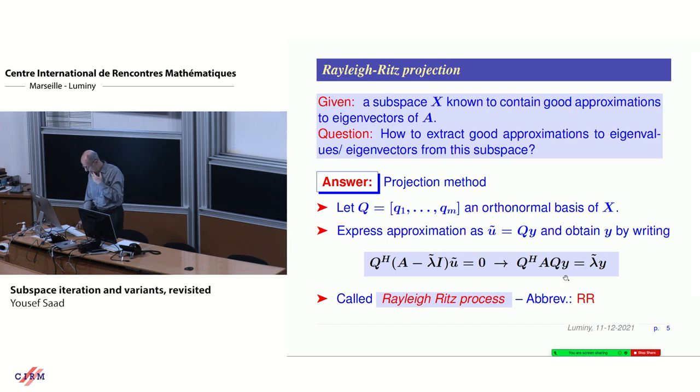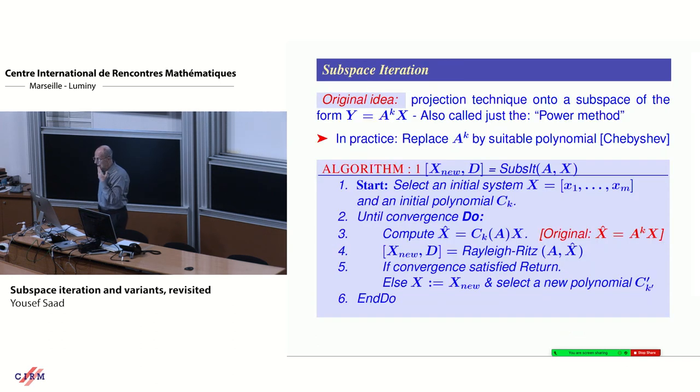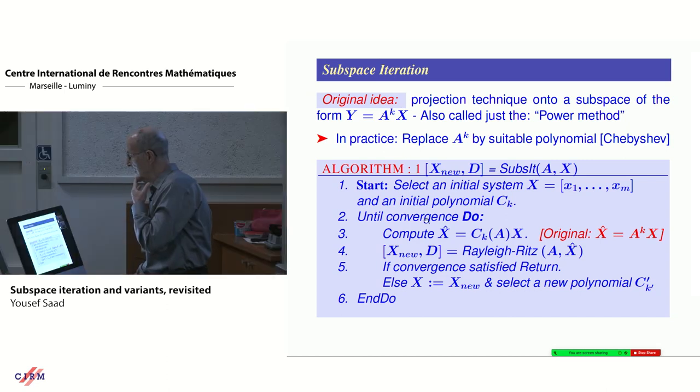This is called the Rayleigh-Ritz process, and it's key to many methods. Subspace iteration is really the combination of that process with just selecting a special subspace. X here is a matrix, the basis of the original subspace you have. You multiply it by A to the power k, and you do now a Rayleigh-Ritz projection on that subspace, and then you repeat.